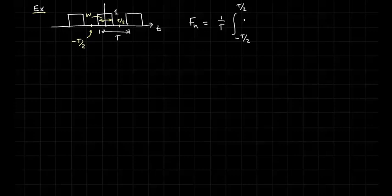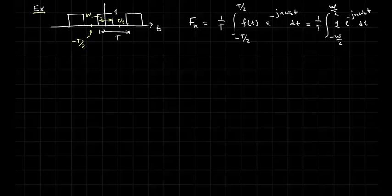So we can actually, okay so I'll go ahead and write this, but we're going to change the limits here in a moment. We'll change it to minus W over 2 to W over 2, and our function has a value of 1. We'll change it to minus Jn e to the minus Jn omega 0 T dt.